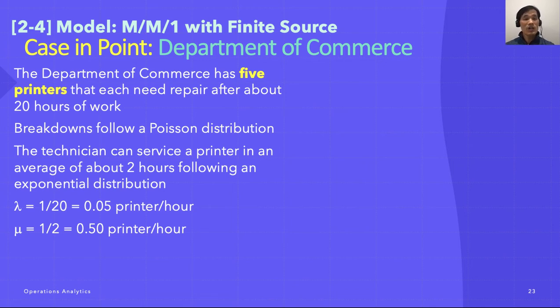Breakdowns follow a Poisson distribution, meaning that the arrival is following Poisson. The technician can service a printer in an average of about two hours following an exponential distribution.